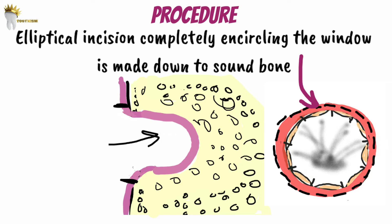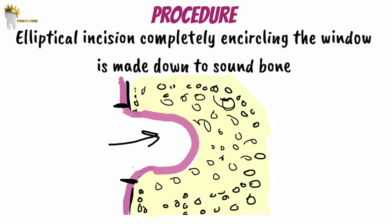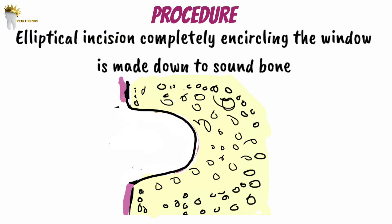This epithelium must be removed completely with the cyst lining. An elliptical incision is made down to sound bone. Next, we have to enucleate the cyst, beginning by stripping the cyst from the window into the cystic cavity.